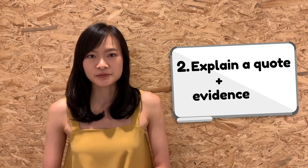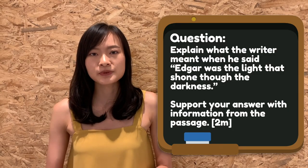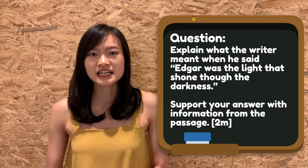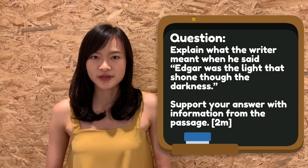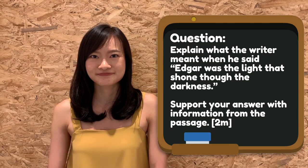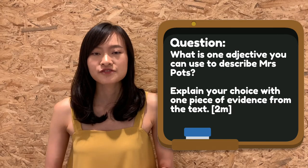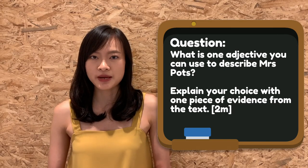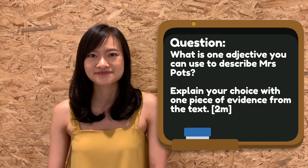Secondly, an explain a quote plus support with evidence type of question. For example, explain what the writer meant when he said, 'Edgar was the light that shone through the darkness.' Support your answer with information from the passage. Thirdly, a character traits plus explanation question. For example, what is one adjective you can use to describe Mrs. Potts? Explain your choice with one piece of evidence from the text.